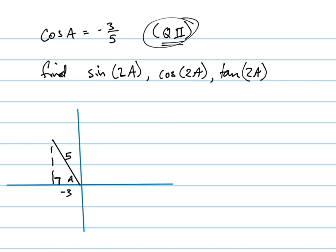So what's this value over here? What's my opposite value? 4. Good, 4. It's a 3, 4, 5 triangle.